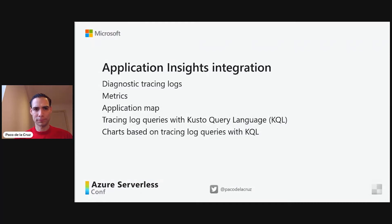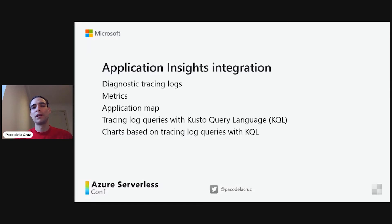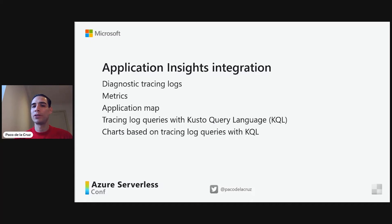Logic Apps provides deep integration with Application Insights. All the actions and all the triggers emit diagnostic tracing logs to Application Insights out of the box, so we don't need to worry about this. On top of that, all the metrics of Azure Functions are being stored in Application Insights. We also have an application map that shows us all the dependencies, if there are bottlenecks, if there are errors calling these dependencies. All these tracing logs can be queried using KQL or Kusto Query Language, and we can also create charts based on these tracing log queries.